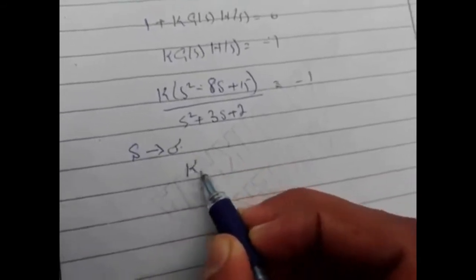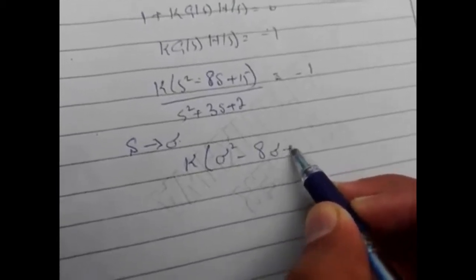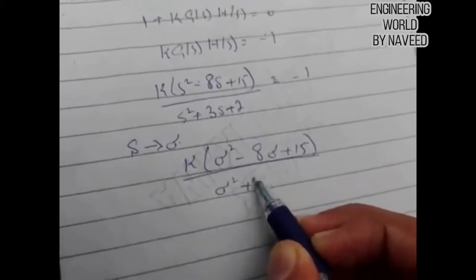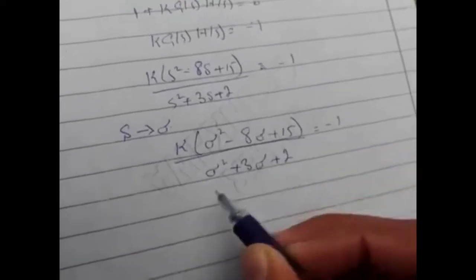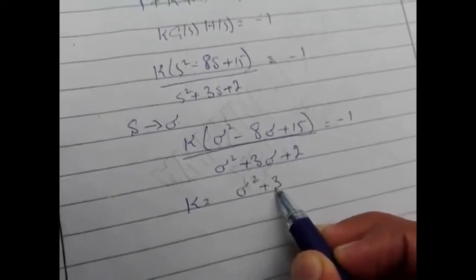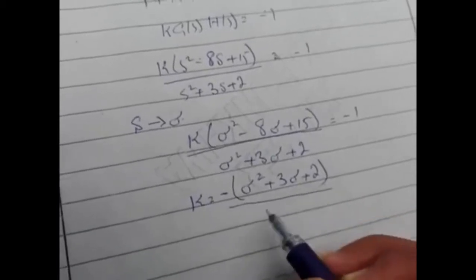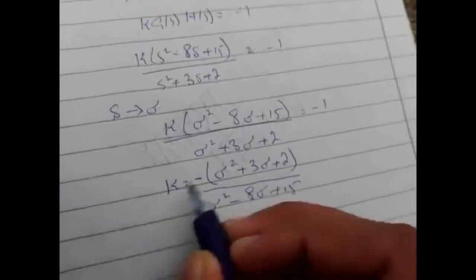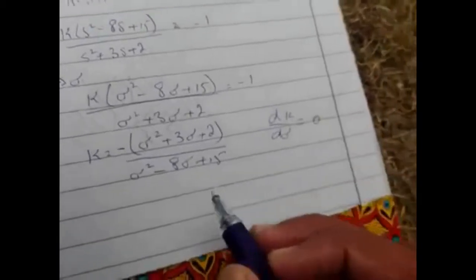Substituting s with sigma on the real axis, we have (σ² minus 8σ plus 15) divided by (σ² plus 3σ plus 2) equal to minus 1. Solving for K, the value of K equals minus (σ² plus 3σ plus 2) divided by (σ² minus 8σ plus 15).